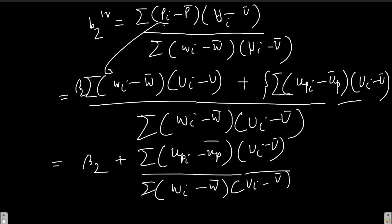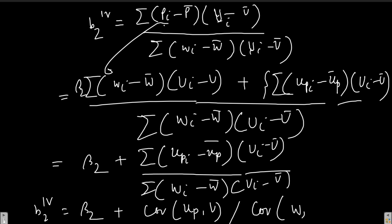Taking the probability limit on both sides and multiplying numerator and denominator by 1/n, we get plim(β₂_IV) equals β₂ plus Cov(uₚ, U) divided by Cov(w, U). The denominator Cov(w, U) is not zero since U appears as a regressor in the wage equation. The numerator Cov(uₚ, U) equals zero since U is exogenous and unrelated to uₚ. Therefore β₂_IV is unbiased and converges to β₂ as n tends to infinity — satisfying the properties of IV.